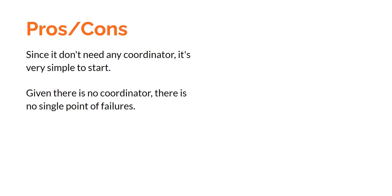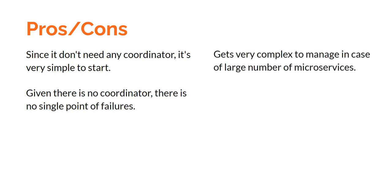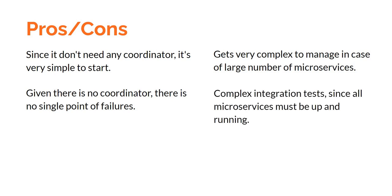The pros of choreography: since there is no centralized coordinator, it is very simple to start with three or four services. Also, given there is no coordinator, there is no single point of failure. The cons: it gets very complex to manage with a large number of microservices. With five or six services, a lot of documentation outside of the services is needed to understand which message goes where and how rollback happens. Additionally, integration tests become very complex since all microservices must be up and running for an end-to-end integration test.